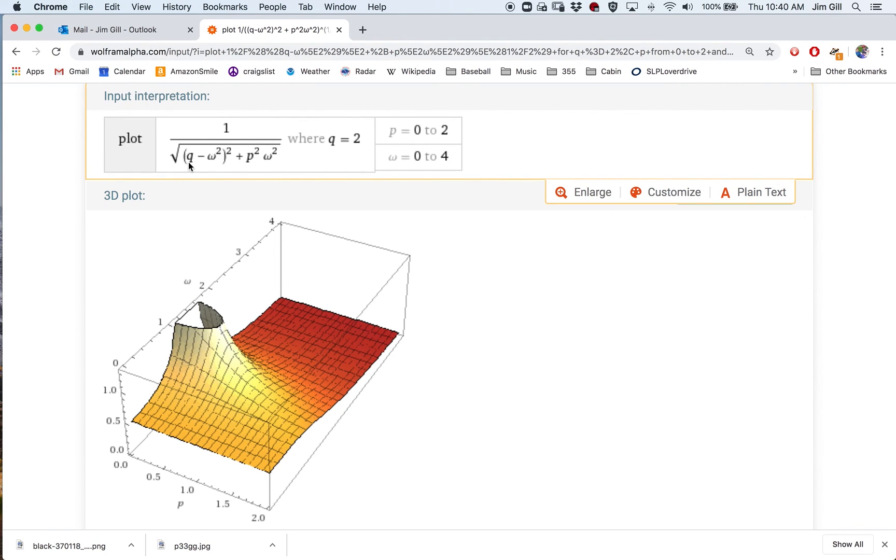It's only when we drive at the particular frequency that's related to the spring constant, related by q equals omega squared, that's when we get large amounts of amplitude coming out, even for a damped spring.